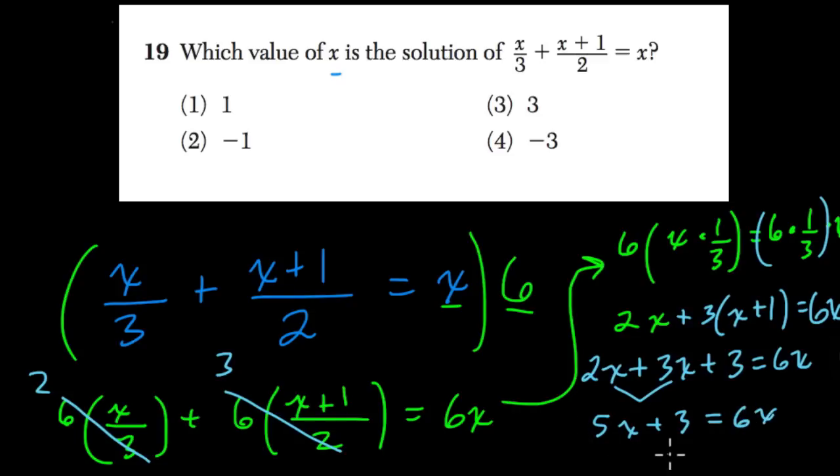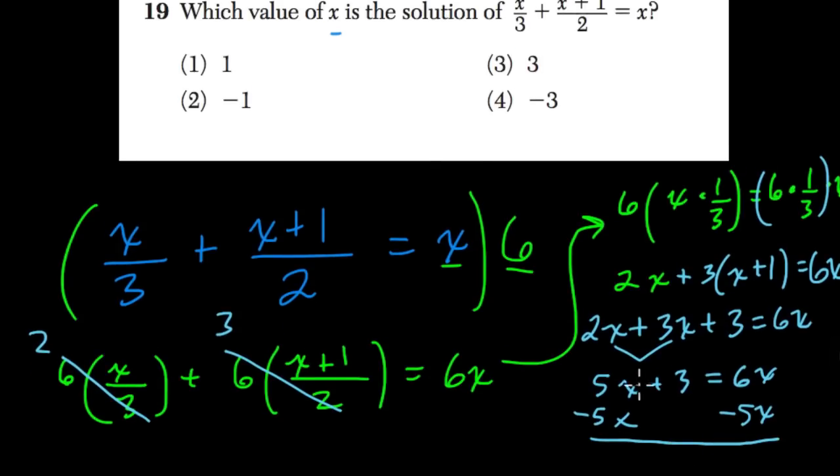Subtract 5x from both sides. Minus 5x minus 5x. What am I going to get? This cancels out, and 3 is equal to x.